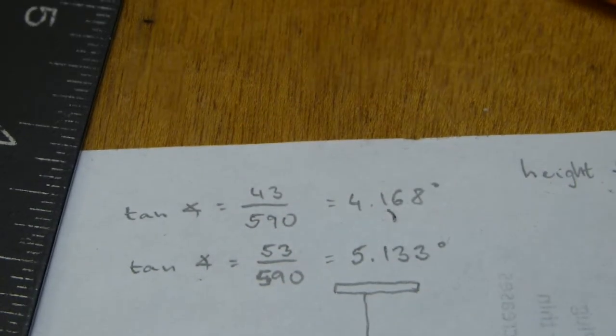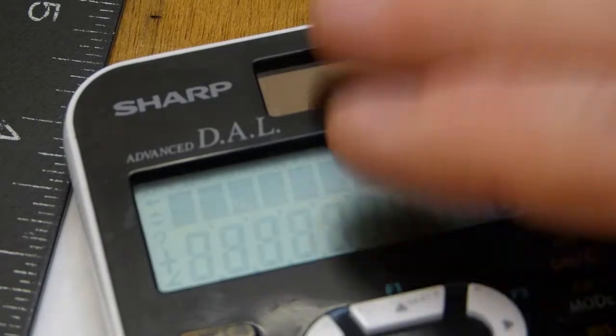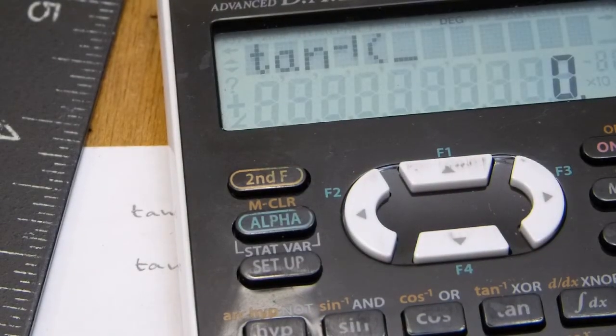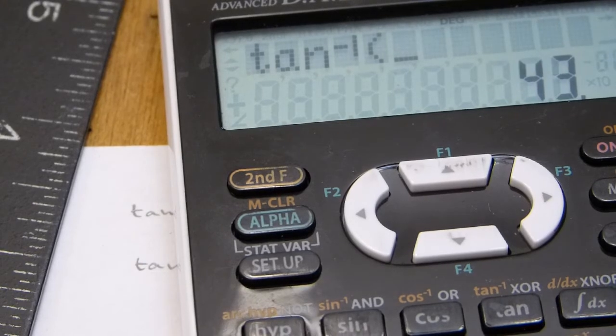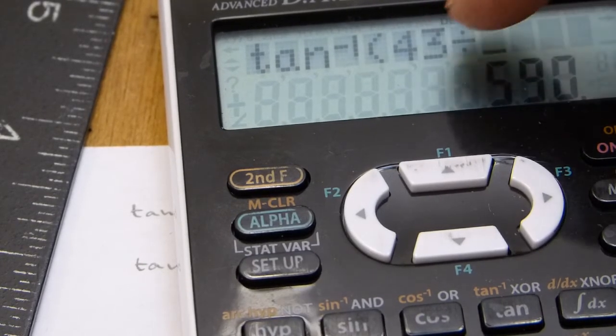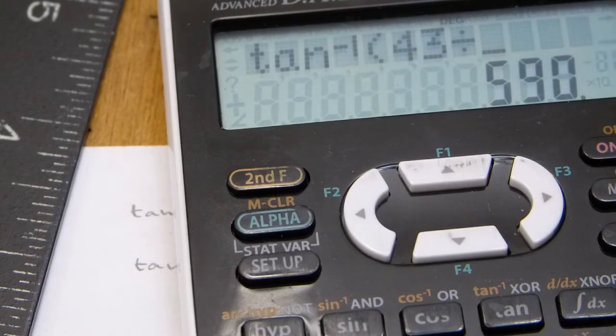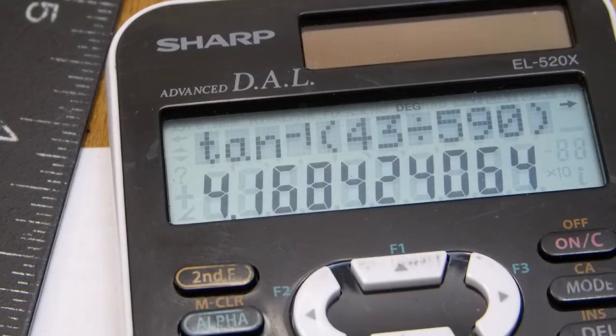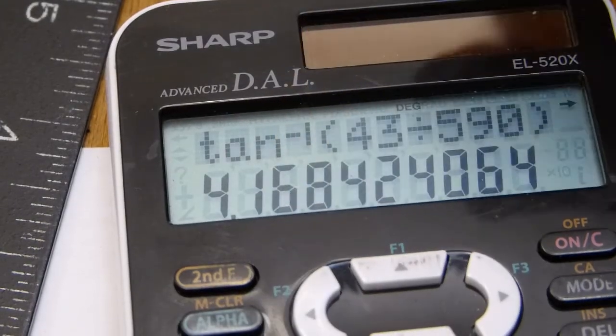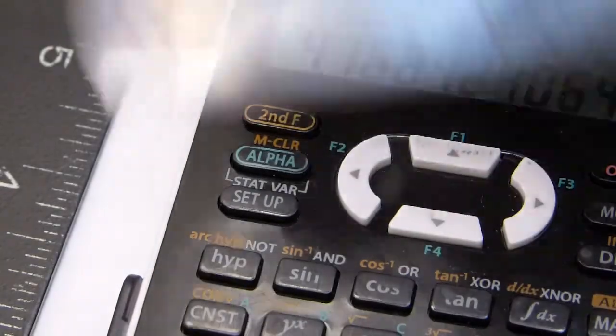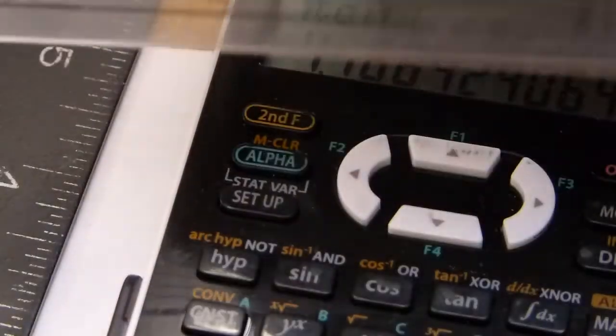And then I just enter the following information on a calculator, a scientific one: second function, tangent, and maybe with a bracket, say 43 over 590, because it's opposite over adjacent—TOA, opposite over adjacent—close the bracket, and there's your four degree angle, exactly the same stuff, exactly the same stuff that was determined with the bevel gauge and the kiddie protractor.